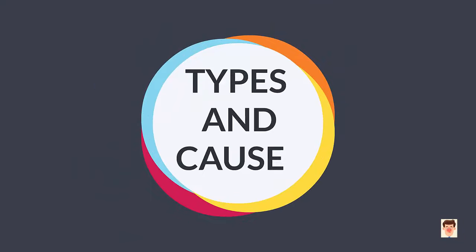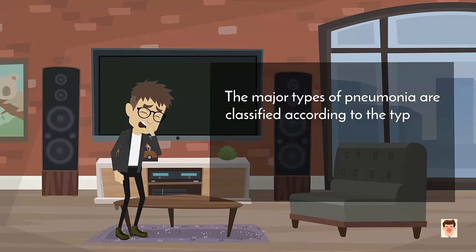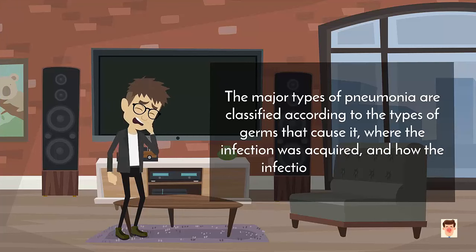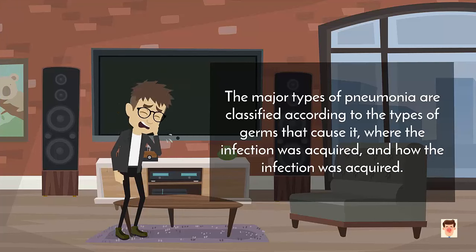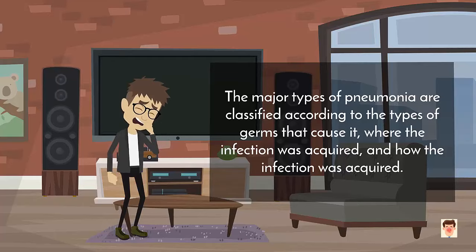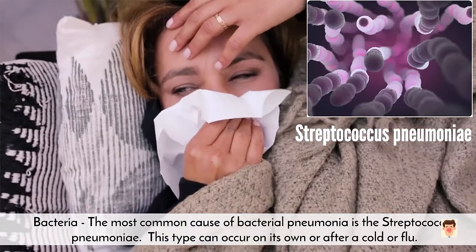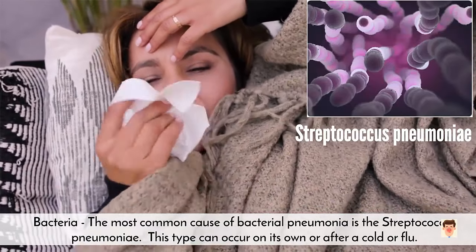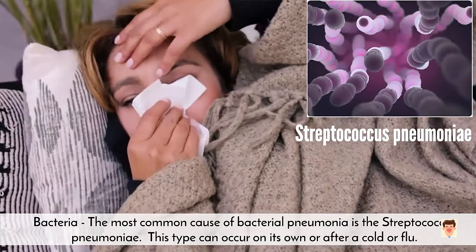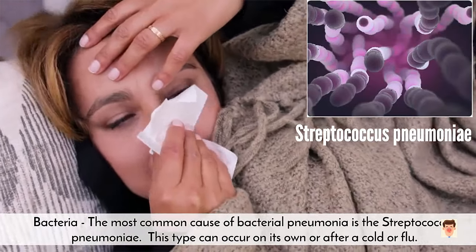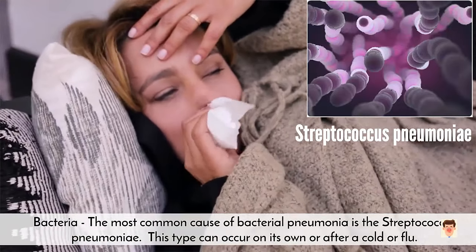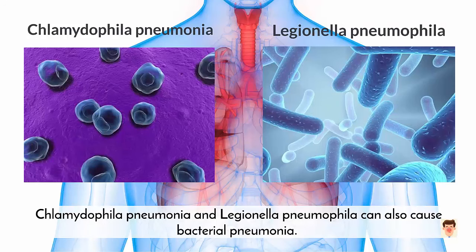The major types of pneumonia are classified according to the types of germs that cause it, where the infection is acquired, and how the infection was acquired. The most common cause of bacterial pneumonia is Streptococcus pneumoniae. This type can occur on its own or after a cold or flu. Chlamydophila pneumoniae and Legionella pneumoniae can also cause bacterial pneumonia.